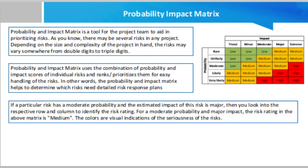The matrix generally used is a three-by-three matrix with low, medium, and high ratings for probability and impact, or a five-by-five with very low, low, medium, high, and very high ratings. A sample probability and impact matrix is shown in this video. If a particular risk has a moderate probability and a major estimated impact, you look into the respective row and column to identify the risk rating — in this case it is medium. Colors are visual indicators of the seriousness of the risk: green means low, red means very high, yellow means medium.